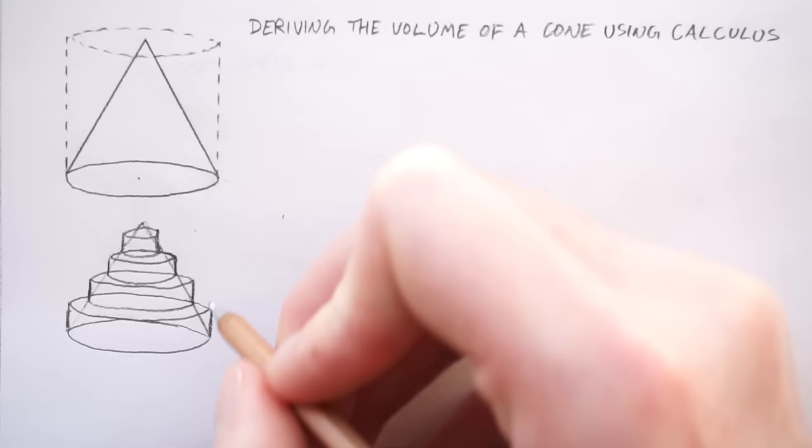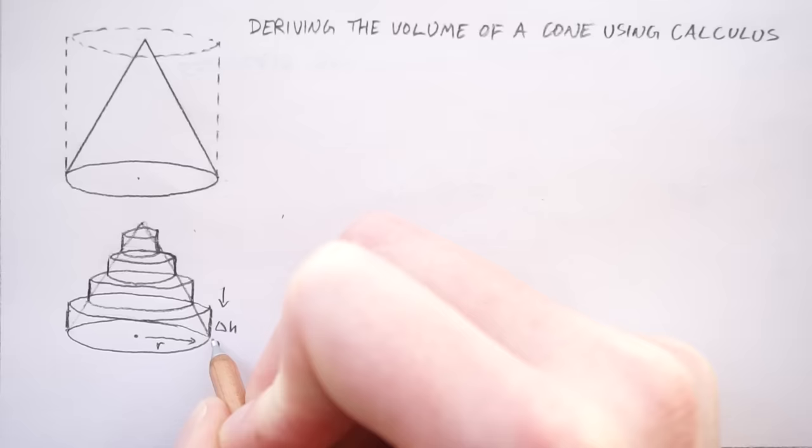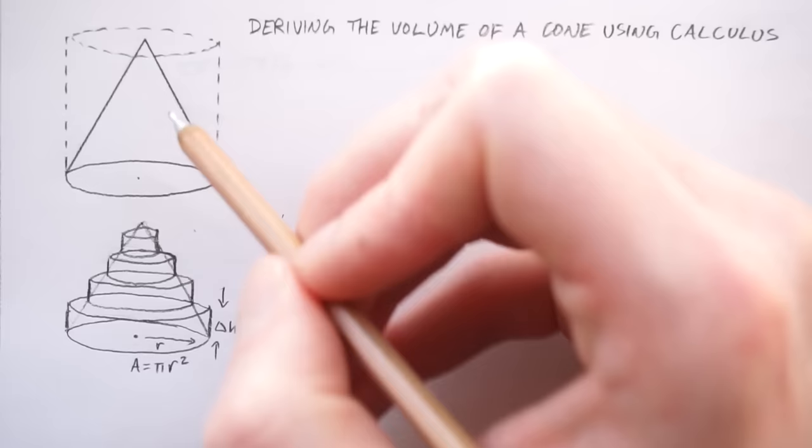So we're going to call the height of each one of these cylinders delta h. And we know what the base is because it's got a radius r and the base area is basically pi r squared. So if you can work out the volume of this and then this and this and this and add them all together, that's an approximation to the volume of a cone.